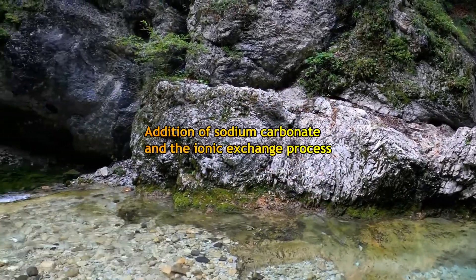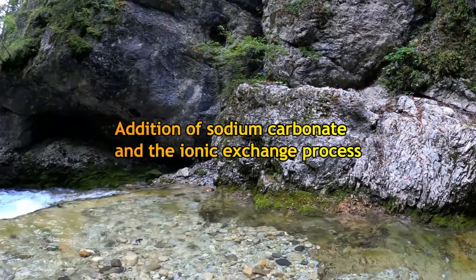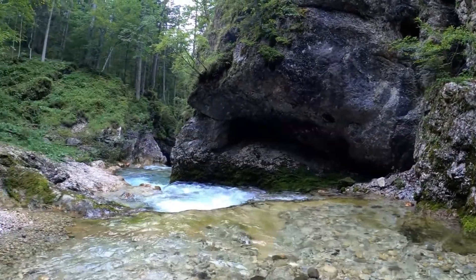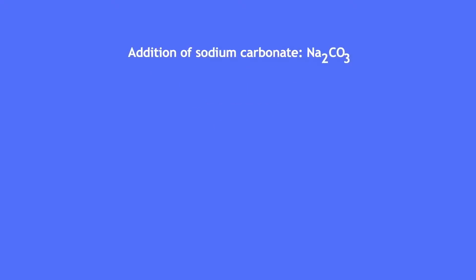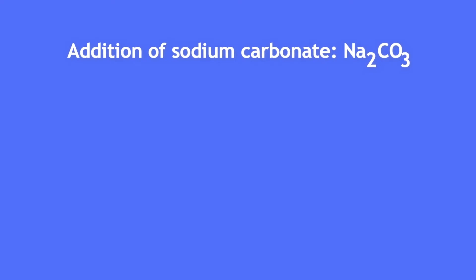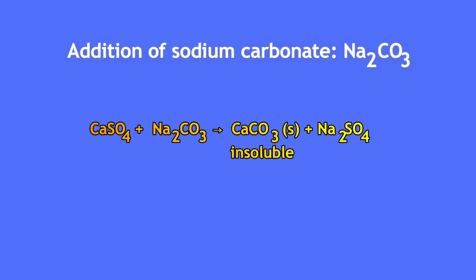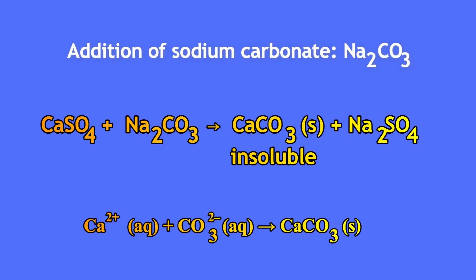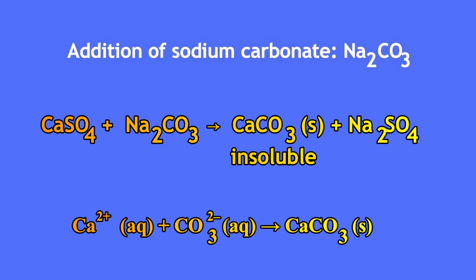The most common options to remove hardness from water are the addition of sodium carbonate and the ionic exchange process, using ion exchange resins. The addition of sodium carbonate, also known as washing soda, to the water is an inexpensive method of removing hardness. Calcium ions from hard water are removed as calcium carbonate, and sodium ions remain in the water. The calcium ions from the hard water react with the carbonate ions from the washing soda. This method can soften water with temporary or permanent hardness.